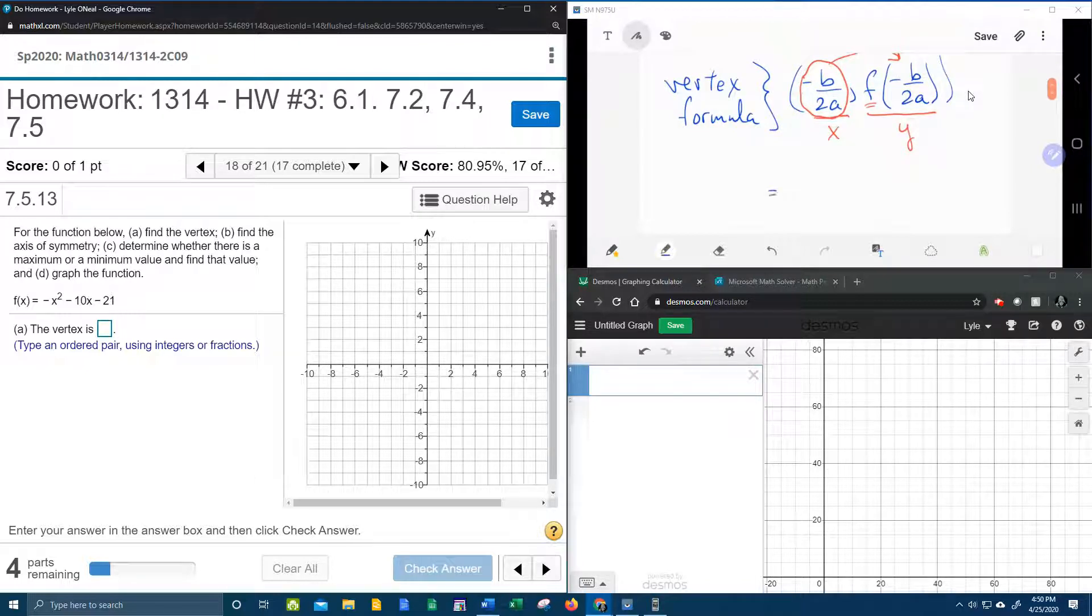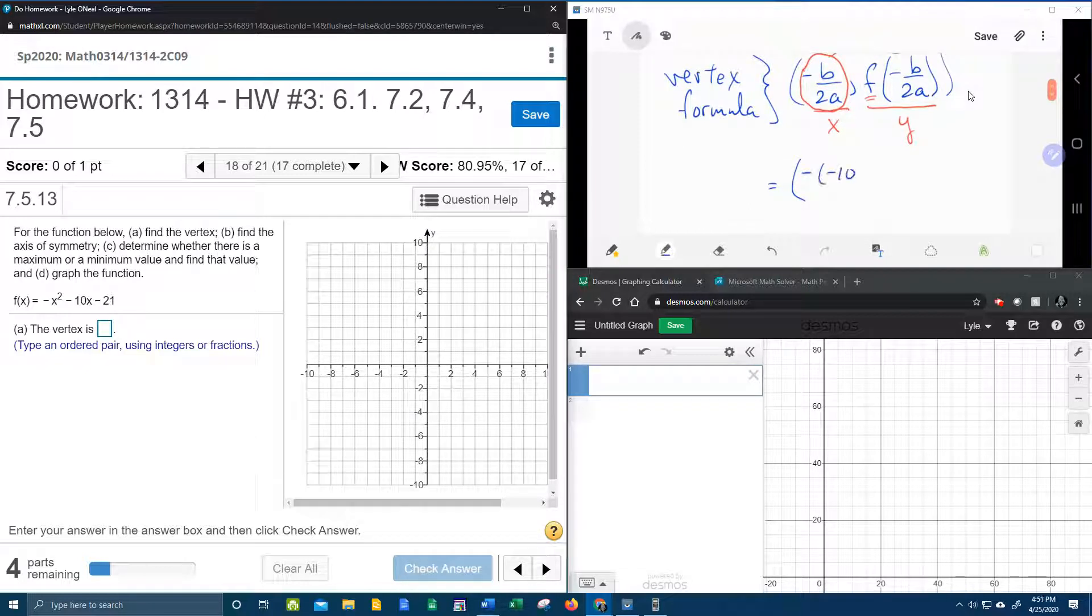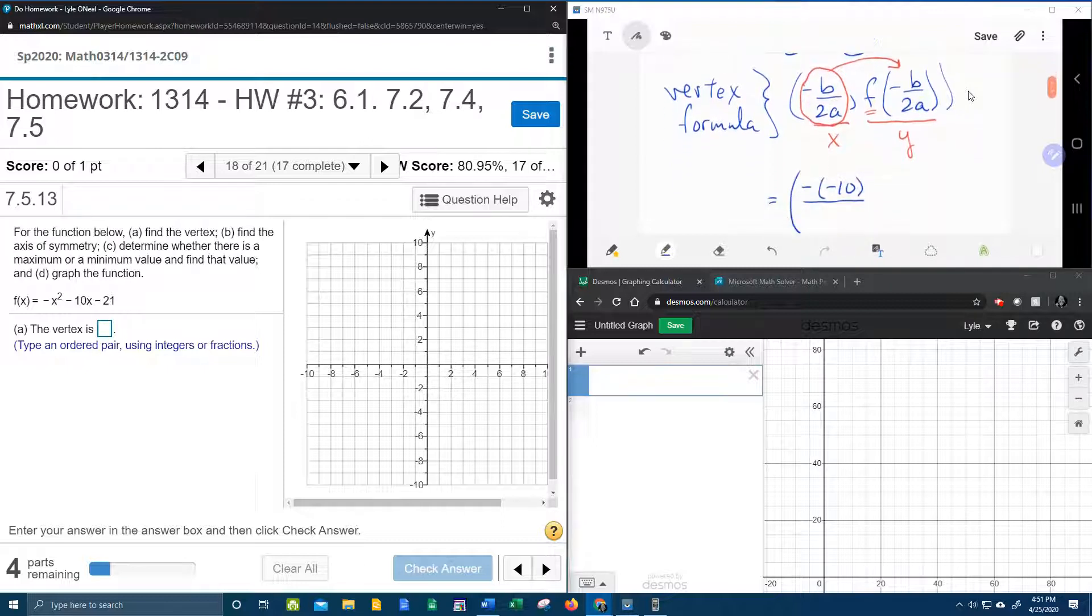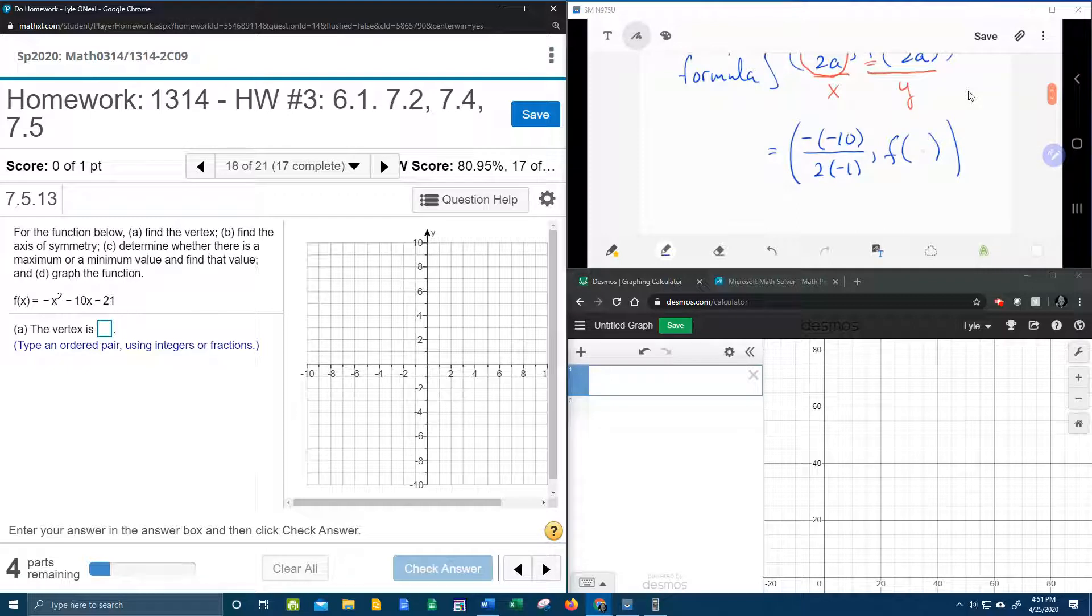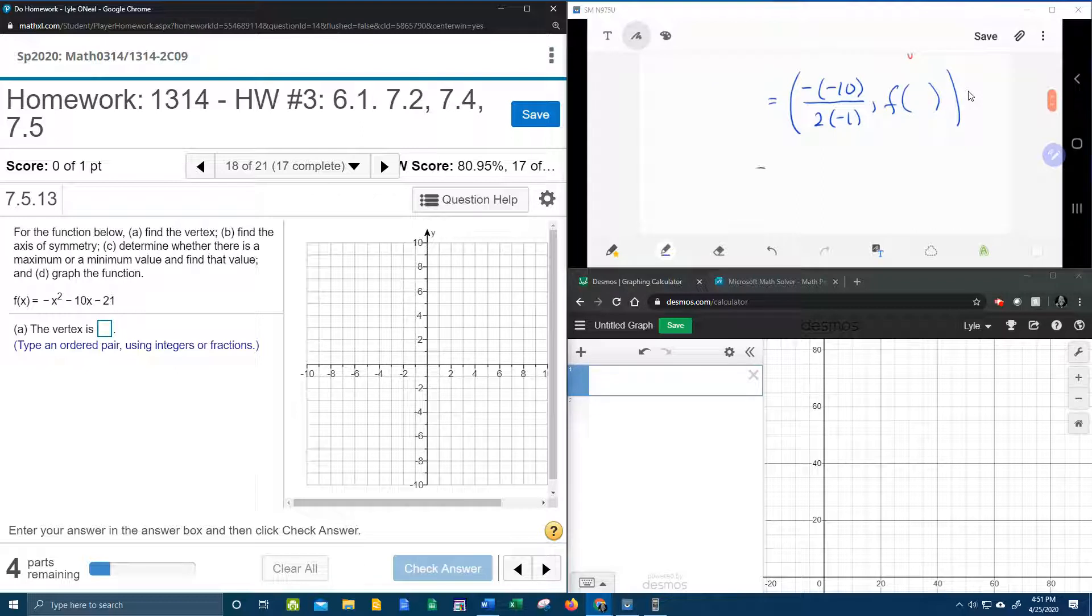Here we go. So that's going to equal negative b, which is minus a negative 10, all over 2a, which is 2 times negative 1, and then f of whatever this is. So I'm going to leave this blank, so that when I calculate this value, I'll know what to put in over here. Alright, here we go. So that's going to be 2 negatives make a plus, so that's going to be 10 over negative 2, which is negative 5.